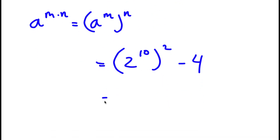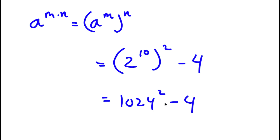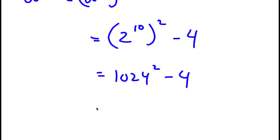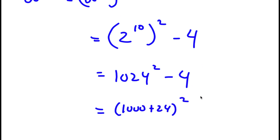2 to the power of 10, that's equal to 1,024. So now I have 1,024 to the power of 2 minus 4. And 1,024, I can rewrite as 1,000 plus 24.